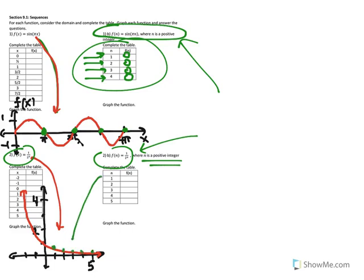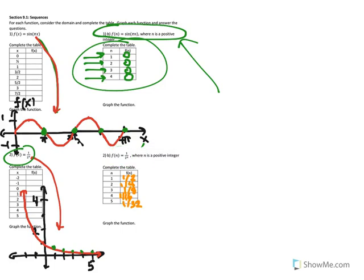For 2b, the graph would be just these 5 green points. A sequence is a function whose domain is a subset of the integers. Just like any other function, it has ordered pairs. The output values are called the terms of the sequence, and the input values are called the term numbers. So the first term would be 1/2, and the fifth term would be 1/32. The graphs of sequences are discrete points.